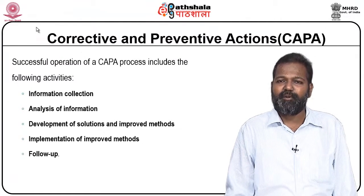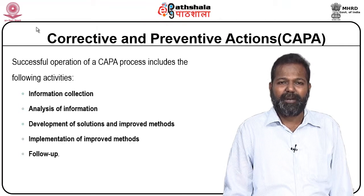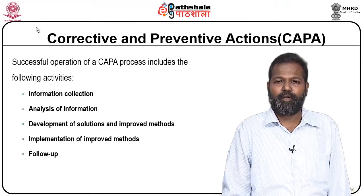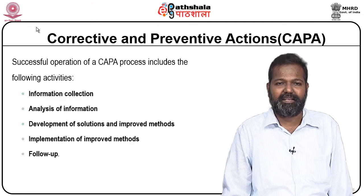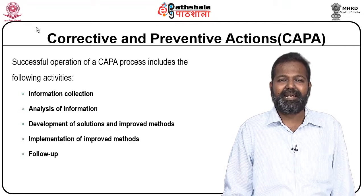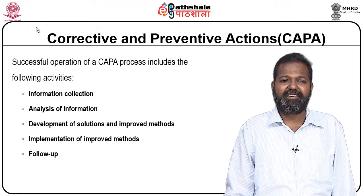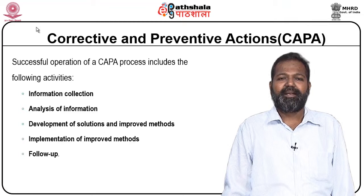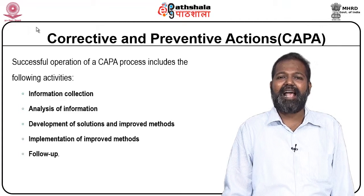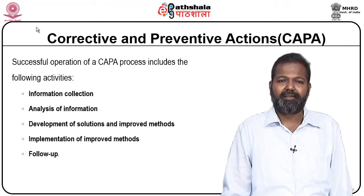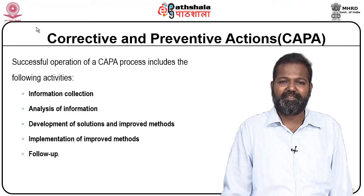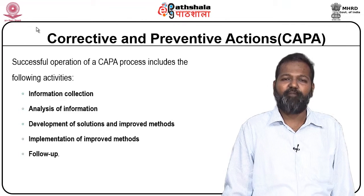Corrective and preventive actions: successful operation of a corrective and preventive action system includes the following activities — information collection, analysis of information, development of solutions and improved methods, implementation of improved methods, and follow-up.